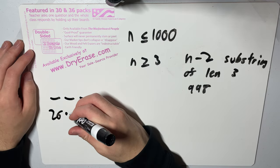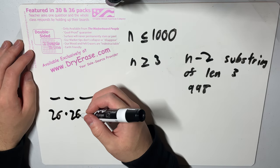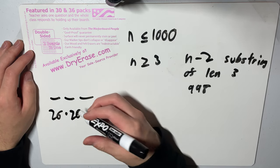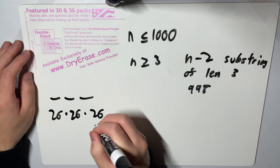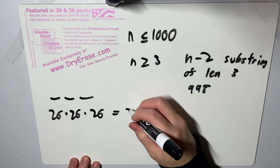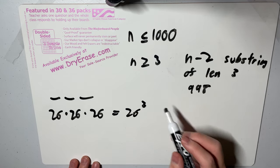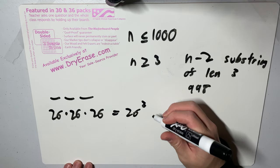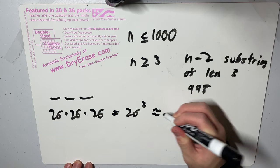...and 26 choices for a third character. So this means that there exists 26 cubed possible strings of length three.